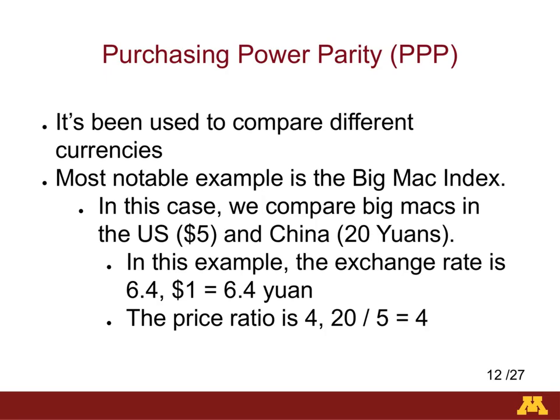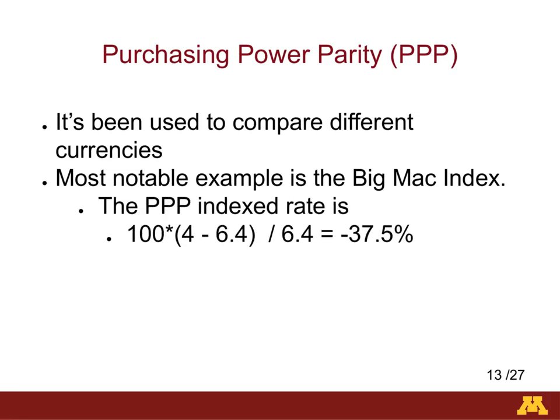Here is an example of how the Big Mac index is computed, from The Economist magazine. The comparison is between a Big Mac purchased in China and the United States. The Big Mac cost was $5 in the US and 20 yuan in China. The currency exchange rate at that time was 6.4 yuan per dollar, and the Big Mac price ratio — the cost of the burgers in each country — was 4. To compute the PPP rate, we subtract the currency exchange rate from the price ratio and then divide by the currency exchange rate. In this example, the yuan is shown to be 37% undervalued compared to the US dollar.